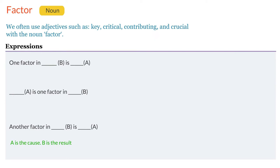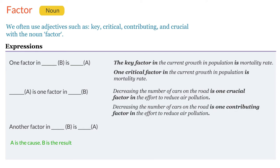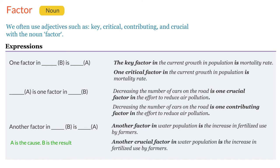Note that we often use adjectives such as key, critical, contributing and crucial with the noun factor. The key factor in the current growth in population is mortality rate. Or one critical factor in the current growth in population is mortality rate. Decreasing the number of cars on the road is one crucial factor in the effort to reduce air pollution. Or decreasing the number of cars on the road is one contributing factor in the effort to reduce air pollution. Another factor in water pollution is the increase in fertilizer use by farmers. Or another crucial factor in water pollution is the increase in fertilizer use by farmers.